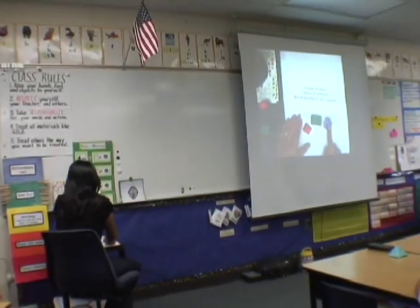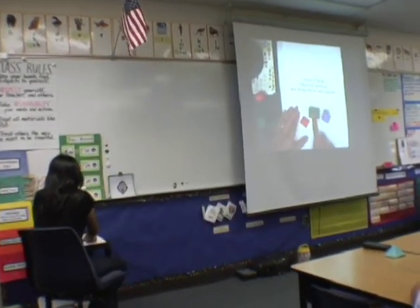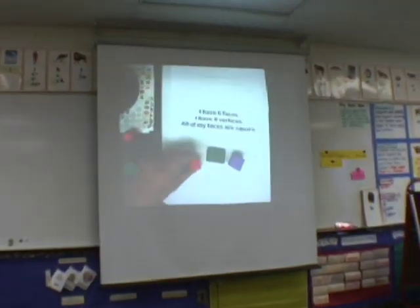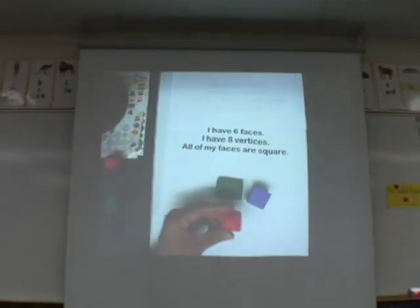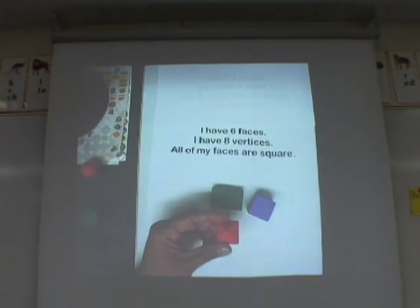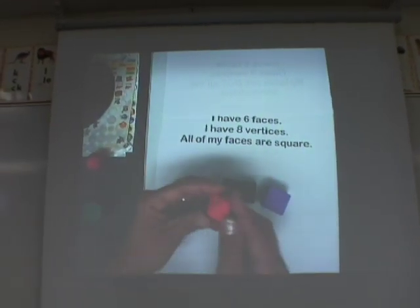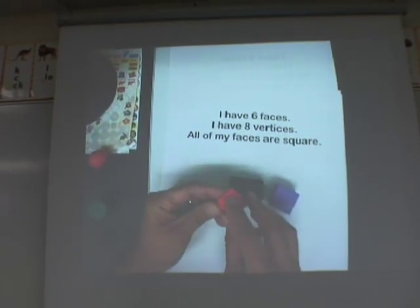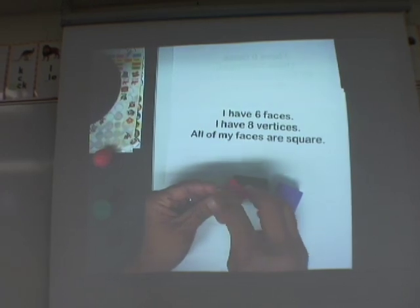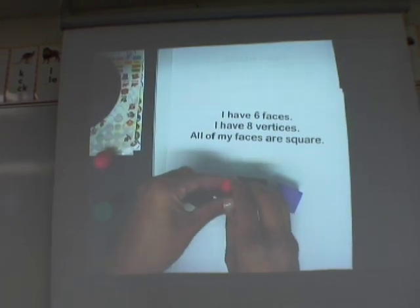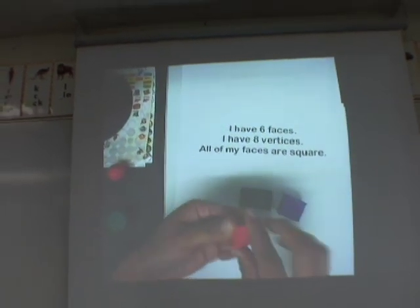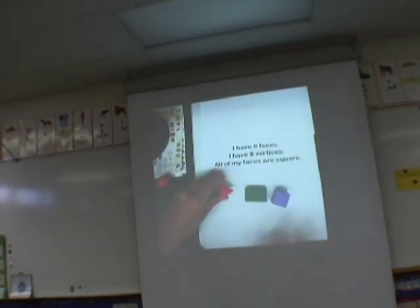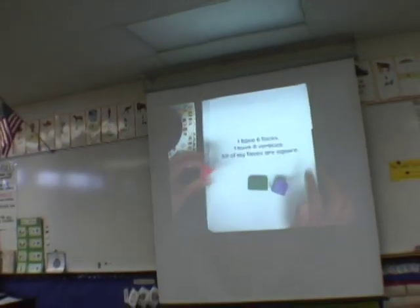I know it can't be the sphere because a sphere has zero faces. Now I'm left with the cube, the rectangular prism, and the pyramid. I'm not quite sure how many faces a pyramid has, so I'm going to count: one, two, three, four, and the base — five. The pyramid has five faces, so it doesn't fit this riddle.